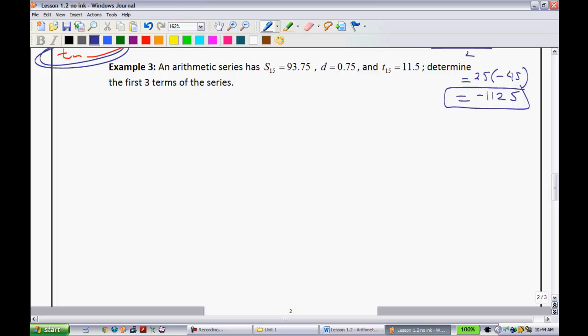This one we have, an arithmetic series has the sum of the first 15 terms. This time they're giving us that information is 93.75. The common difference is .75, and the 15th term is 11.5. Just a little bit different question with the information that they're given. I like to write down the stuff on this side of the page. Sum of the first 15 terms is 93.75. You'll notice that they tried to make this question a little bit more funky on you, because they gave you some decimals. But life goes on, it's not the end of the world. Since they're referencing the sum of the first 15 terms in t sub 15, we know that n is also equal to 15.